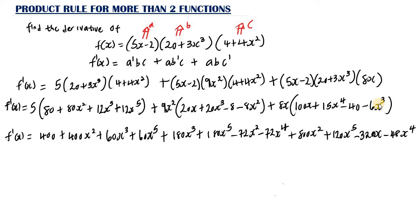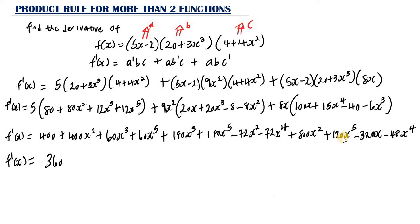Now we add up the like terms. For the s to the 5th terms: 60s⁵ plus 180s⁵ plus 120s⁵ gives 360s to the power of 5.